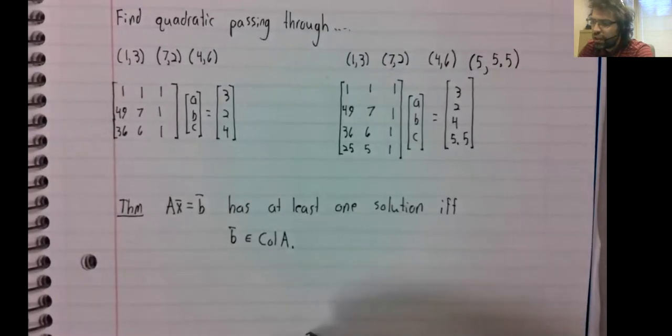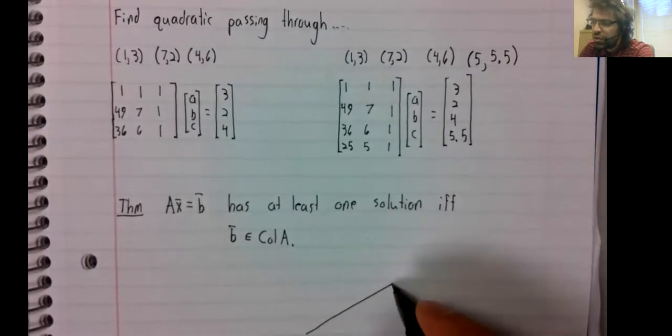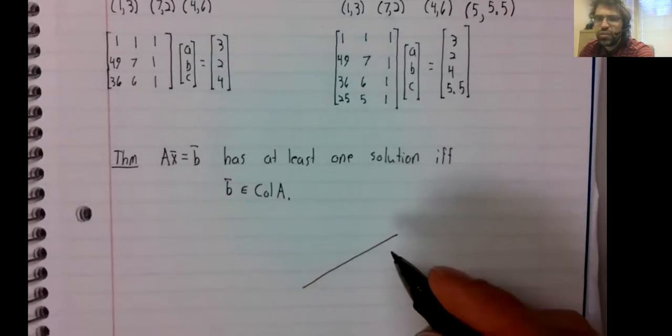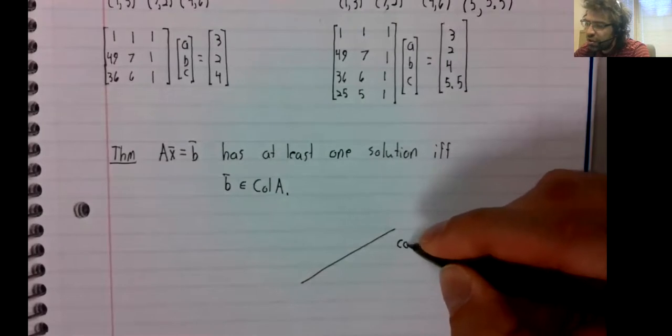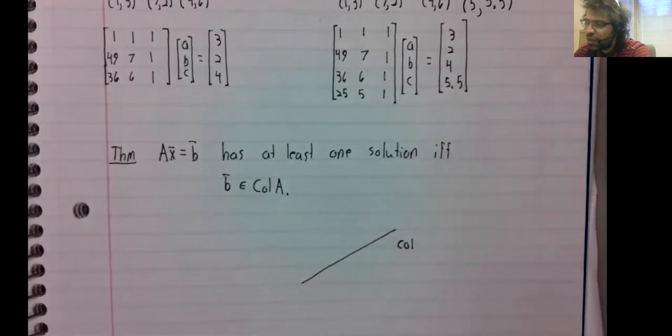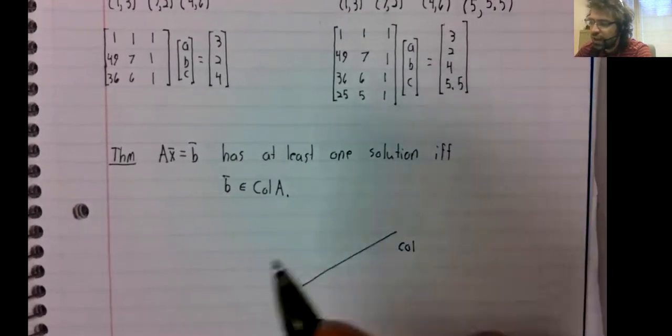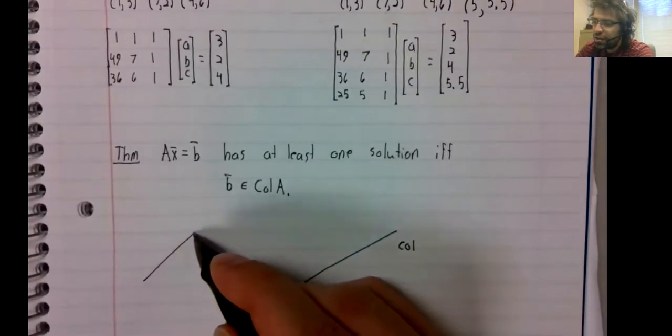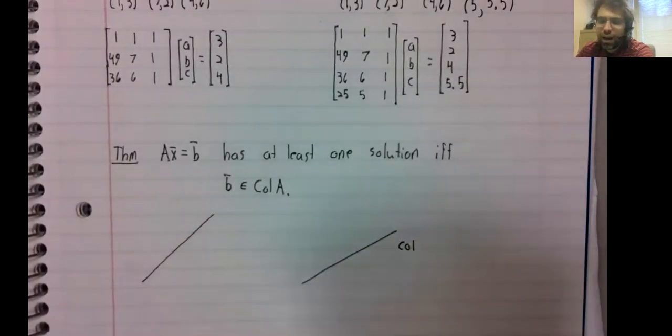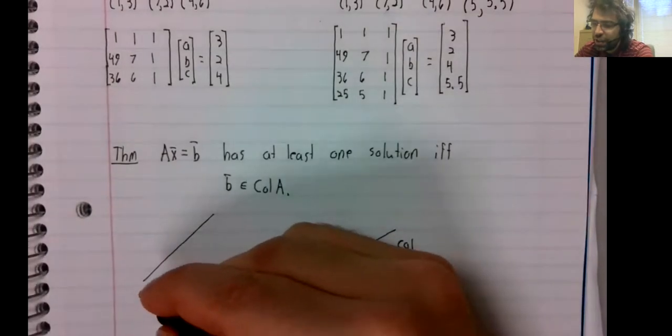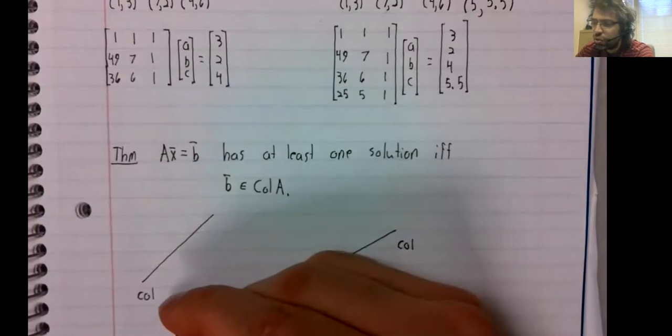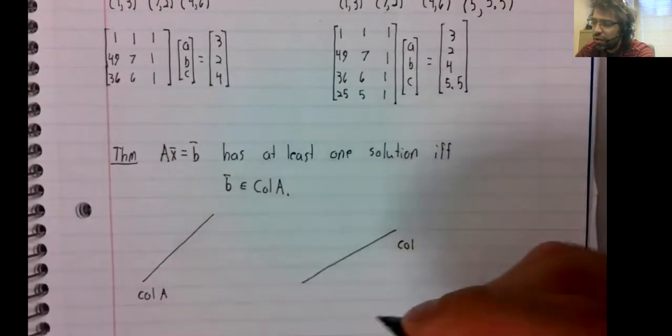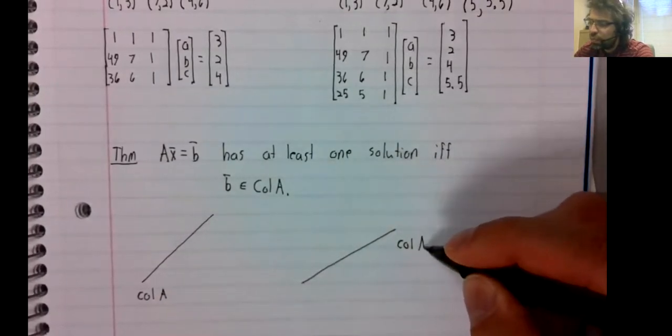So for ease of visualization, let's think of the column space as a line. I mean, it's not. It's some higher dimensional subspace...